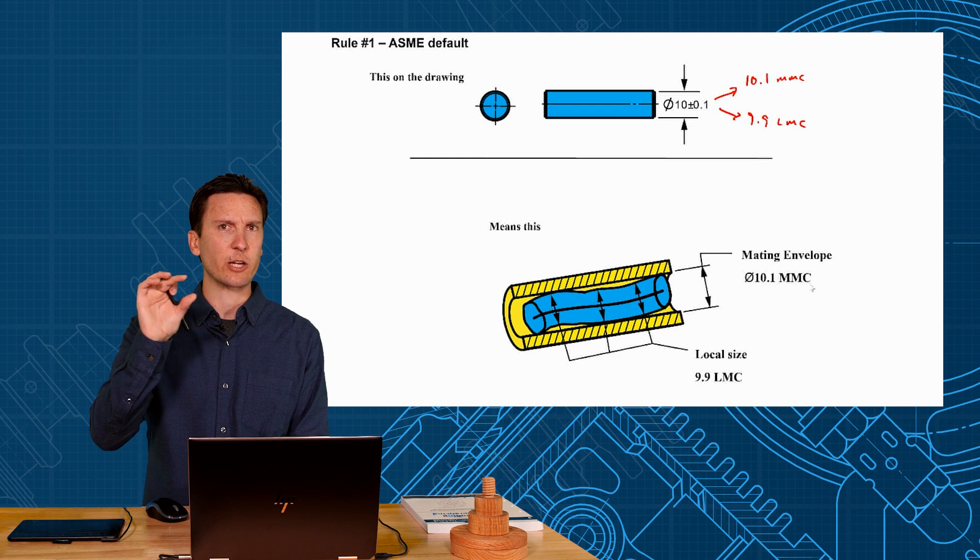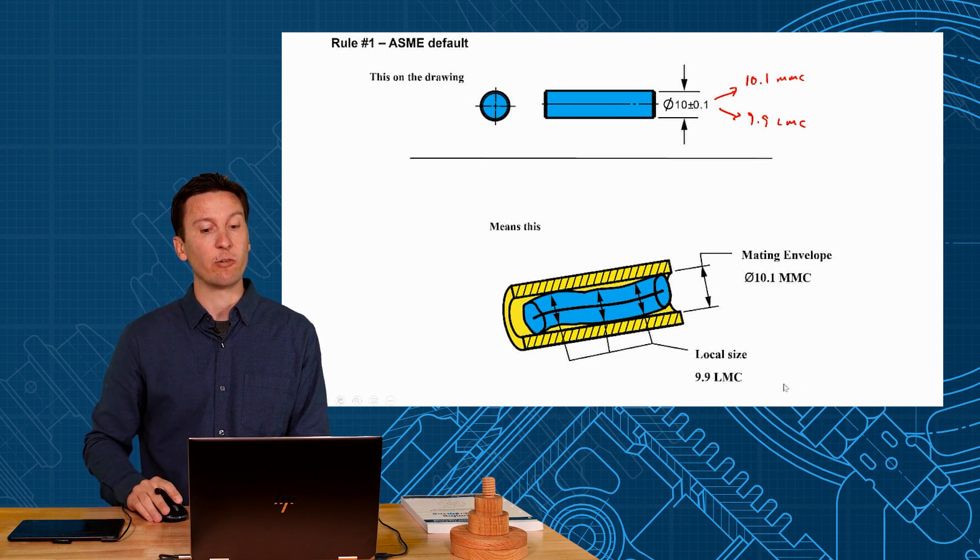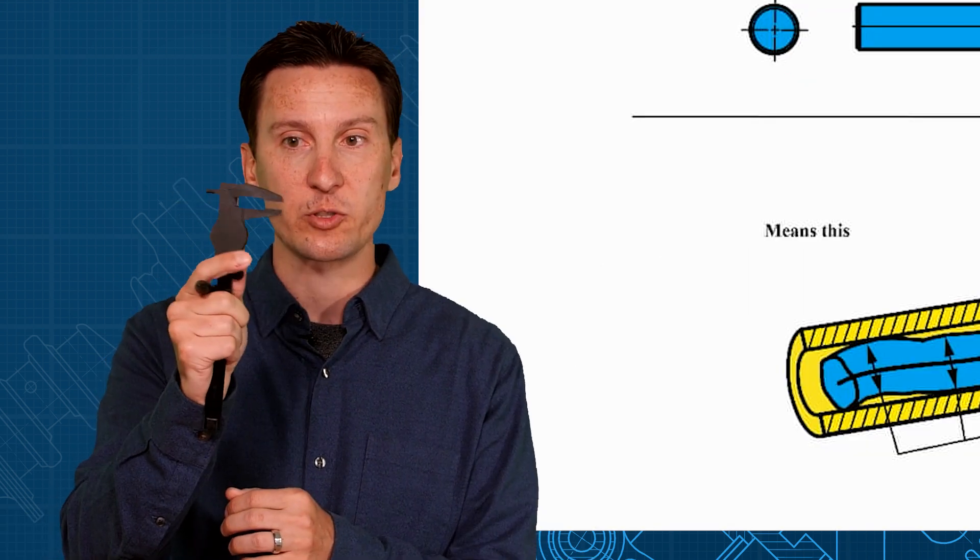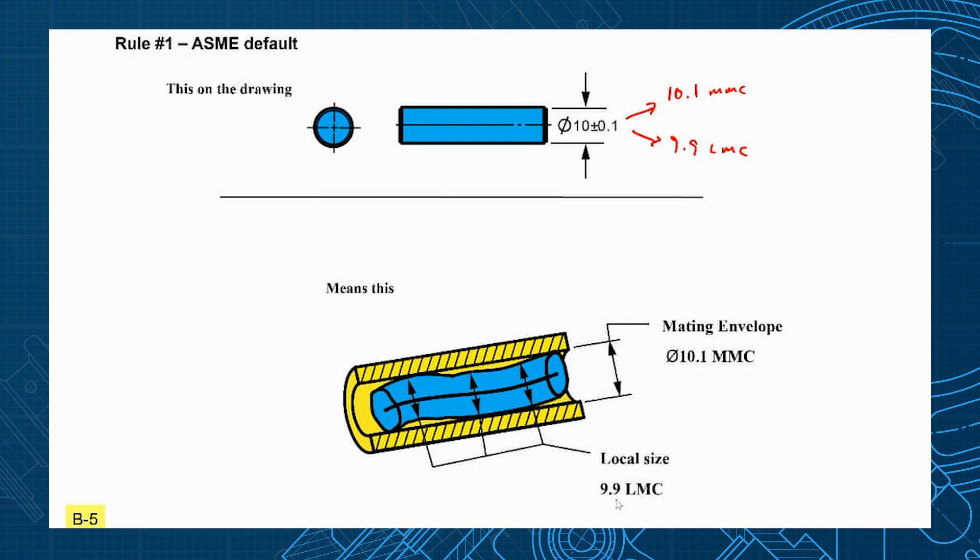But how do we know that each cross section isn't too small? Well then we have a local size requirement no smaller than 9.9 LMC. So we could verify that with calipers to make sure each local cross section is no smaller than 9.9.